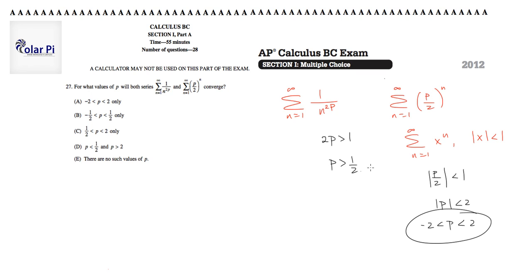So we have this and this. When we put them together, it's going to say 1 half is less than p is less than 2. The only place where both of those things are fulfilled. Therefore, answer choice C.